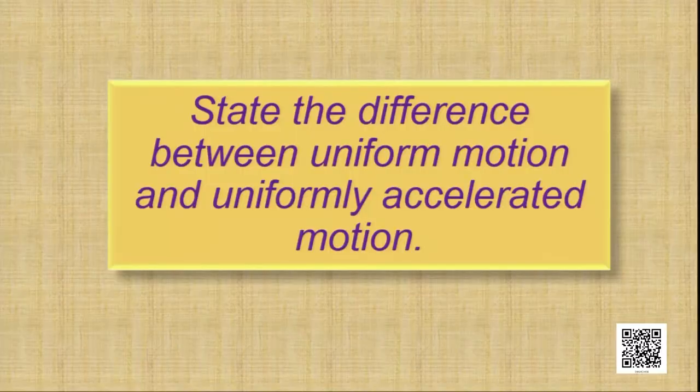The second question is: state the difference between uniform motion and uniformly accelerated motion. Uniform motion is when the object covers equal distance in equal interval of time — velocity remains constant. Uniformly accelerated motion means the change in velocity is uniform or equal for an equal interval of time — the velocity is changing in equal magnitude for a given interval of time. That is the difference between uniform motion and uniformly accelerated motion.